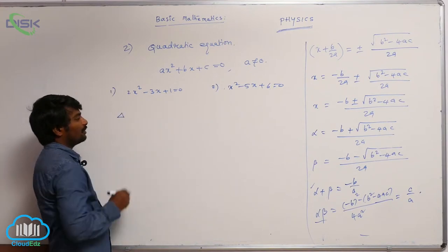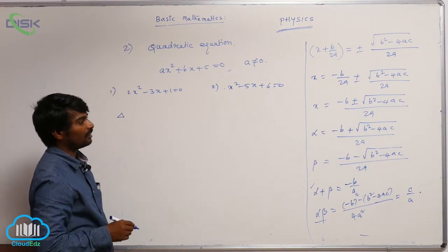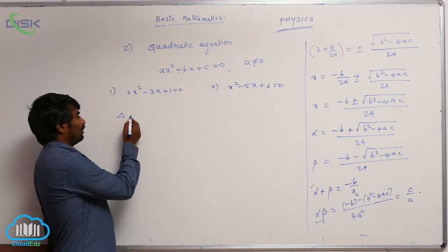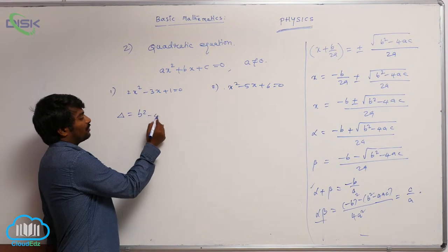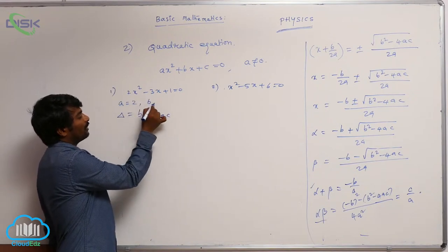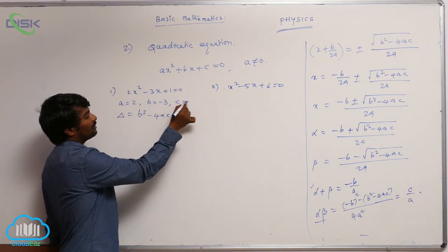And first let me check whether the discriminant is 0, positive or negative. B square minus 4ac. Here a equal to 2, b equal to minus 3, c is equal to 1.